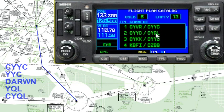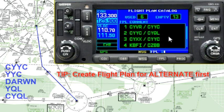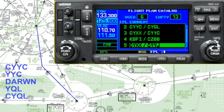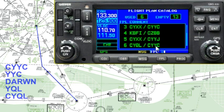Here's a little tip: the first thing you want to do is make sure you've got a flight plan set up for your alternate before you build the flight plan for your destination. There's already a flight plan from Calgary to Lethbridge, but what we need for our alternate is one that goes from Lethbridge to Calgary — and flight plan number six does exactly that.